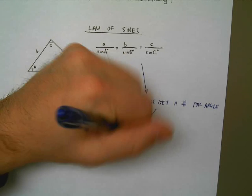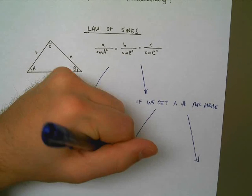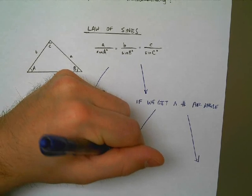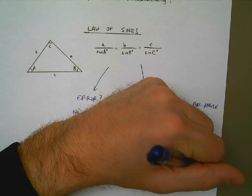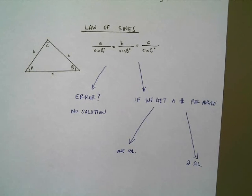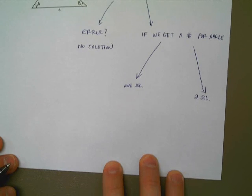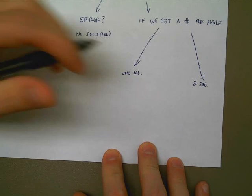If we get a number out for an angle, that means that we have one of two cases. We either have one solution, or we have two solutions. But at least there's an answer. That's what we know.